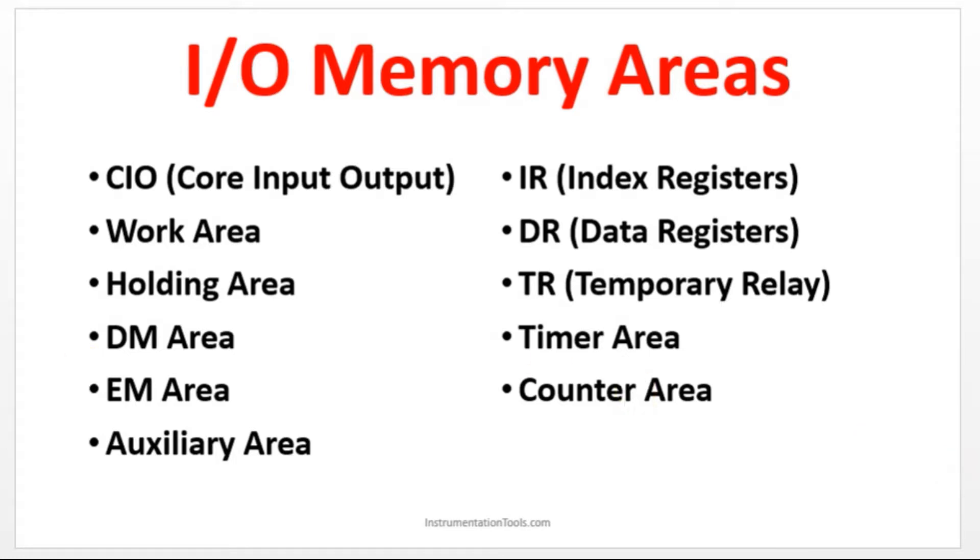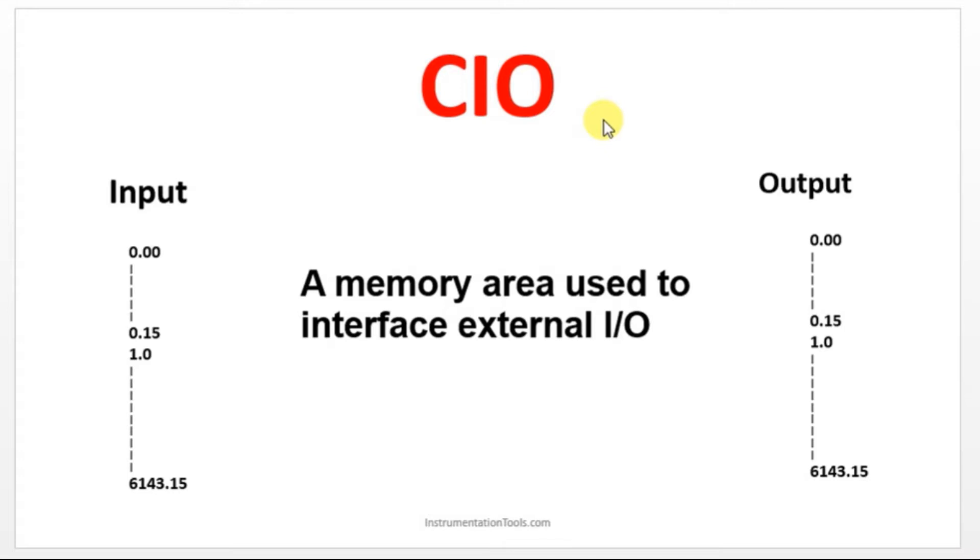Let us see about that first: Core Input and Output. The input addressing in Omron will be starting from 0.00. This 0 is the channel number and the next 0 is the terminal number. Like that it will start. 0.00 up to 16 we are having here. 0.00 to 0.15 is the first channel. Next, it will start with 1.01, like that it will go. That's it for input addressing. Input address of Omron will start from 0.00 and it will go till 6143.15.